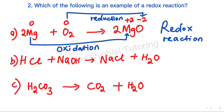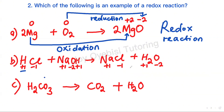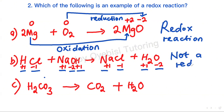For option B, hydrogen is positive 1 in all compounds except for metal hydrides, chlorine is negative 1, sodium is in group 1 so it's positive 1, and oxygen is negative 2 in all compounds except for peroxides. On the right, sodium is positive 1, chlorine is negative 1, hydrogen is positive 1, and oxygen is negative 2. Hydrogen is 1 on both sides, chlorine is the same, sodium is the same, oxygen is the same — there are no changes. So this is not a redox reaction.